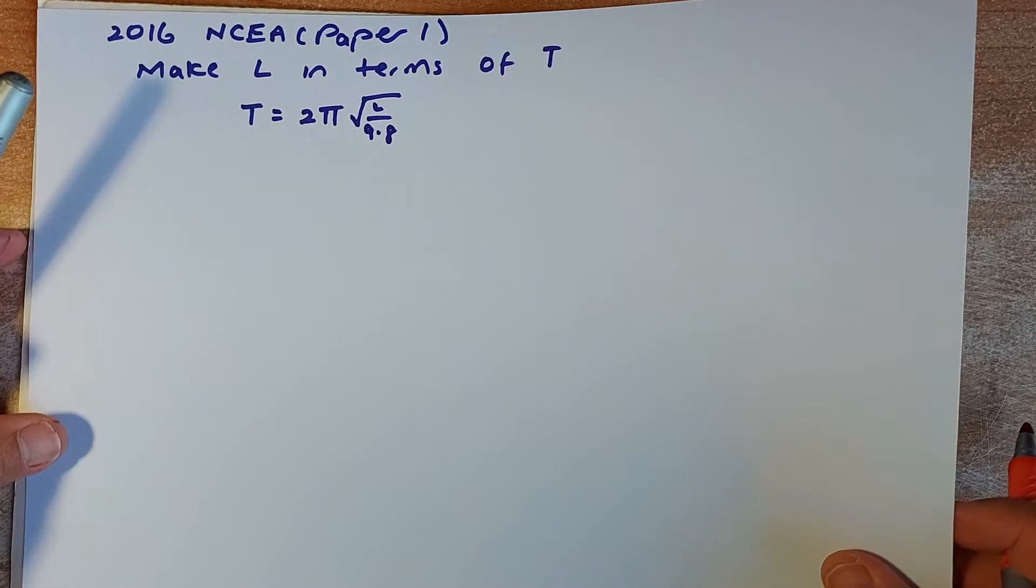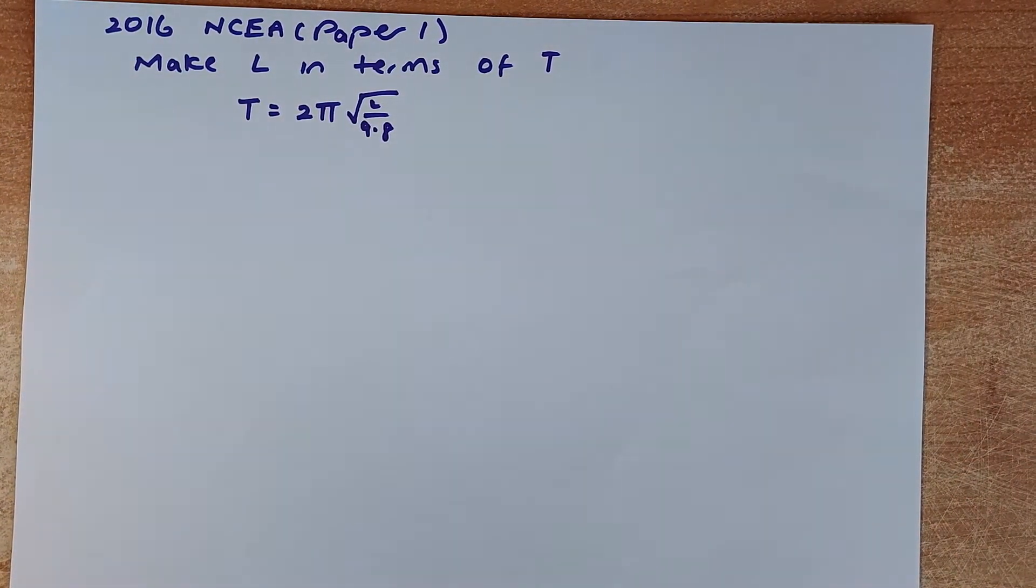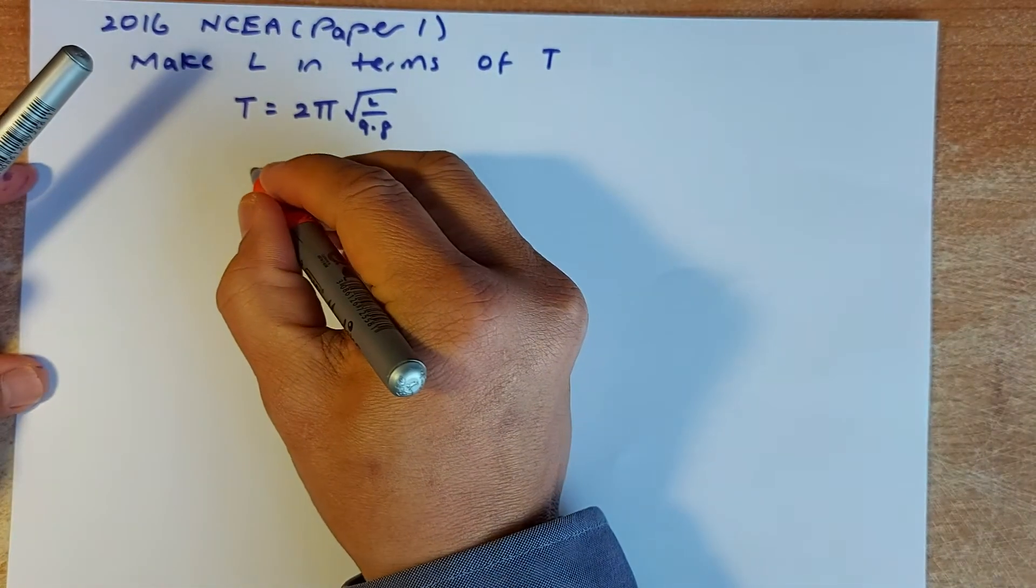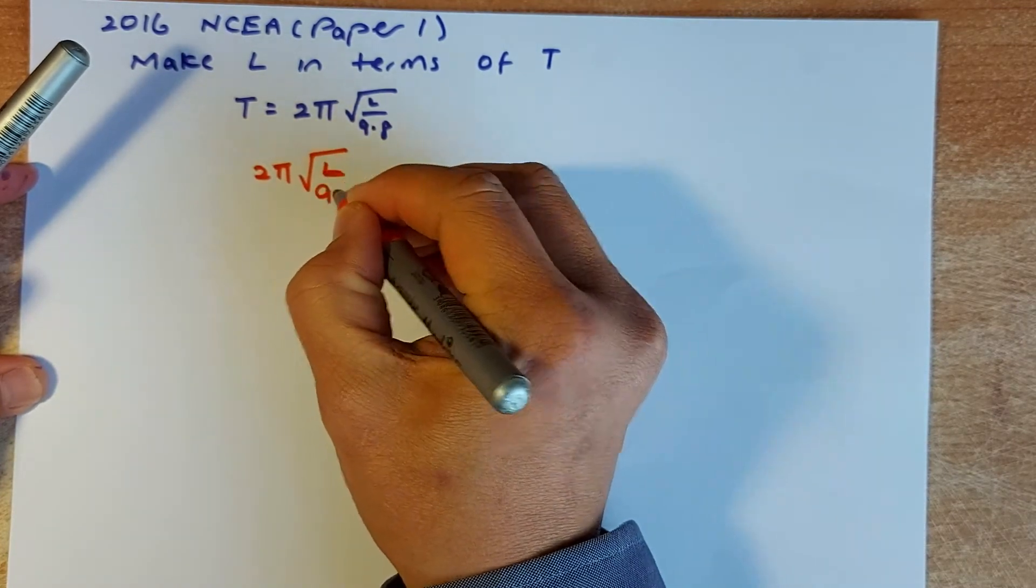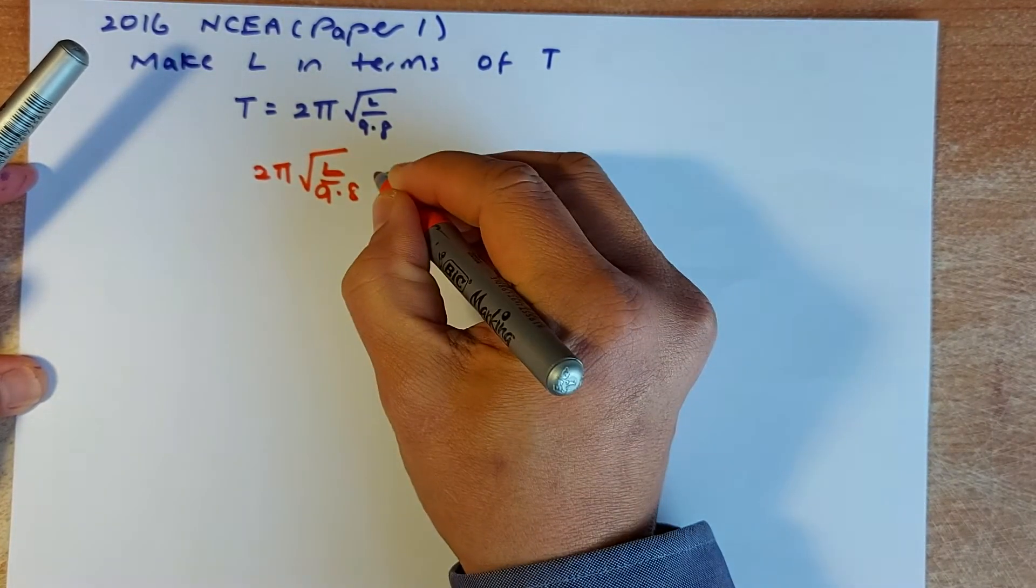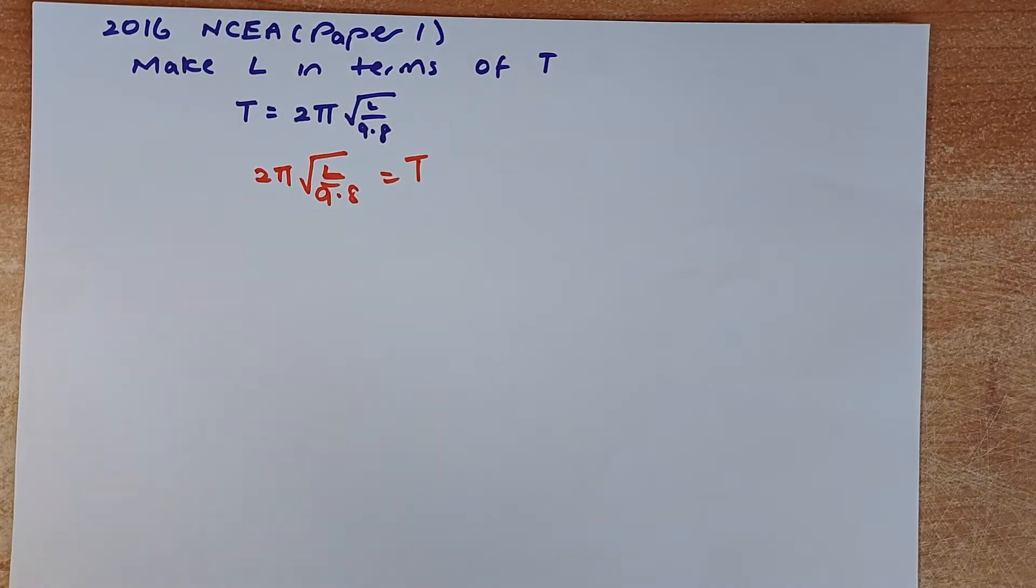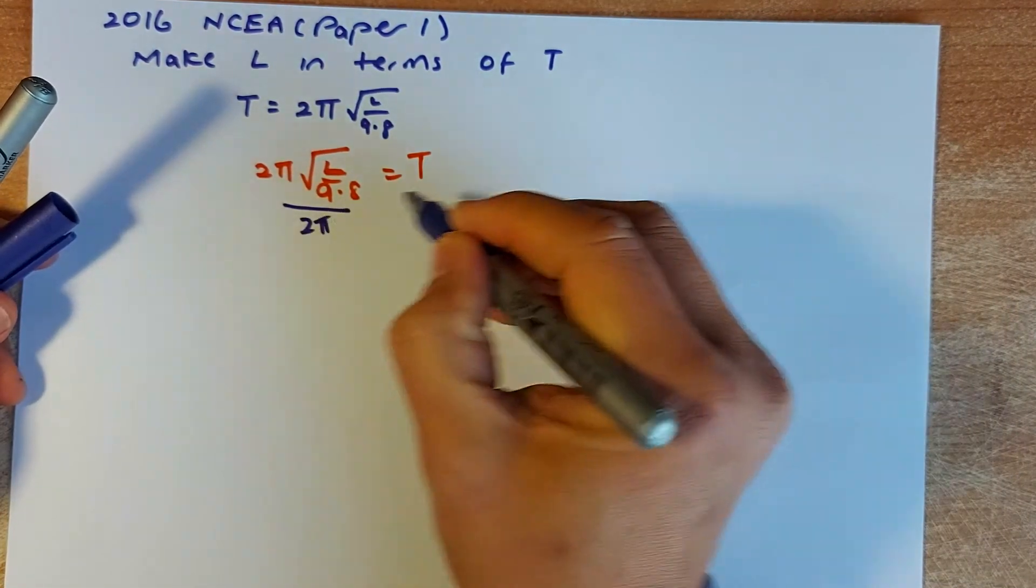Now we're going to do the two harder questions. These are both excellent questions. First one is the formula 2016. This is actually a word problem. They are actually asking you to make L in terms of P. So again, first step, rearrange the formula. 2π√(L/9.8) that is equal to T. The first thing you need to do is to get rid of the 2π. To do that, you're going to divide by 2π. So you're going to divide by 2π on both sides.